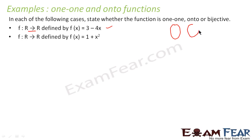For a function to be one-to-one, suppose we have x1 and x2. x1 maps to f(x1) and x2 maps to f(x2). For the function to be one-to-one, if we can prove that f(x1) = f(x2) implies x1 = x2, then it is a one-to-one relationship.